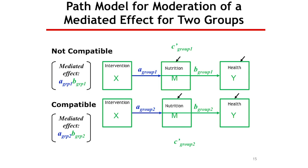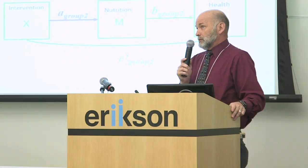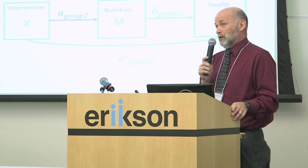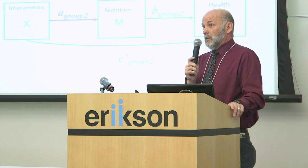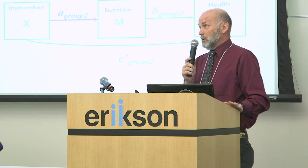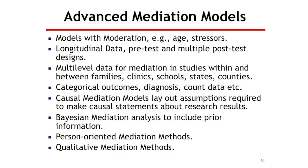Compatibility could be a continuous variable — statistically you just include it as a continuous measure, but you'd have to pick at what values you wanted to test those effects. There are other models with additional moderators: stressor, age, and so many different moderators. That sounds like exactly what you're trying to do in this research.